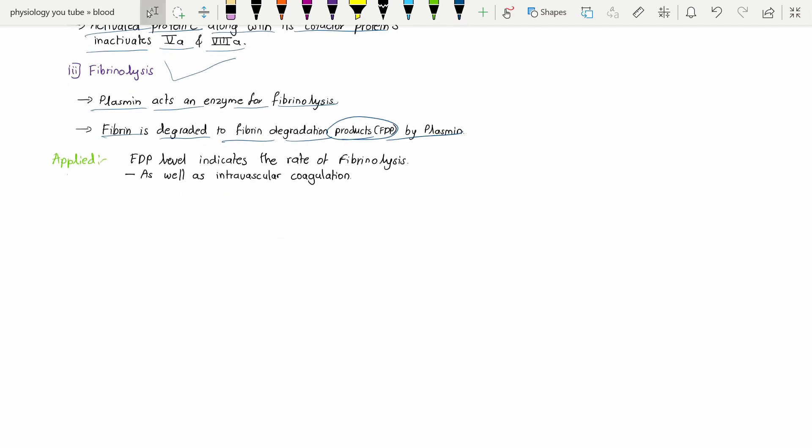Here you need to know one applied aspect: the fibrin degradation product level indicates the rate of fibrinolysis. For example, if there is any intravascular coagulation, then there is an anti-clotting mechanism that is going to form the fibrin degradation products. So if there is any intravascular coagulation, then there is increased FDP level.